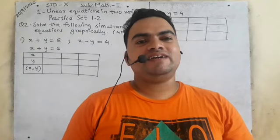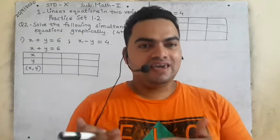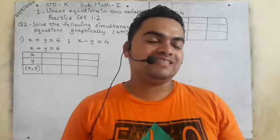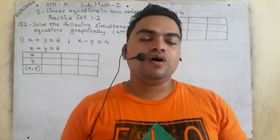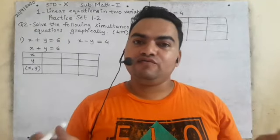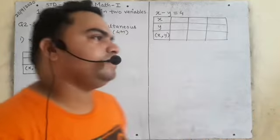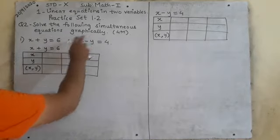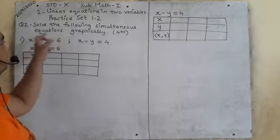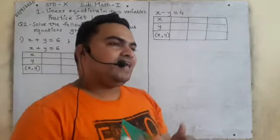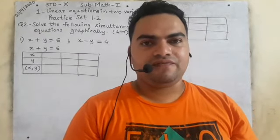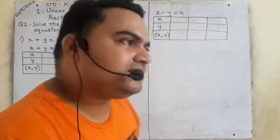Now we will see Practice Set 1.2, Question Number 2. In this question, we have to solve two simultaneous equations and we have to draw a graph — compulsory. When the word 'graphically' appears, it means we solve the table and draw a graph. It is very simple.